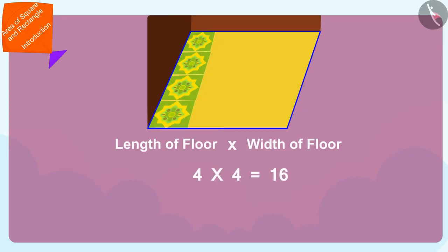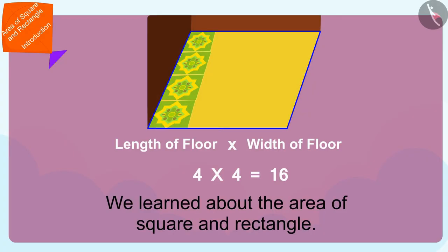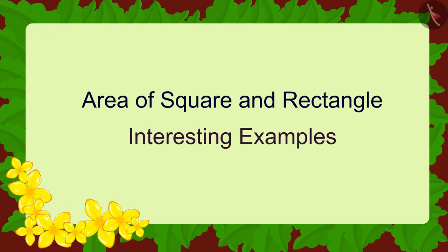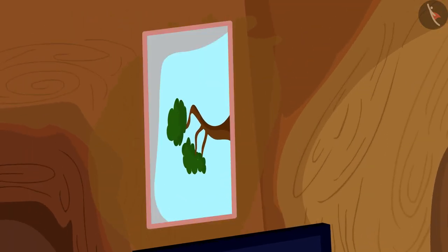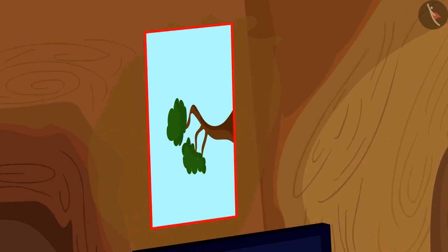Hello children, in the last video we learned about the area of square and rectangle. In this video we will learn more about it through some interesting examples. Chanda wants to fit a glass in her window pane. She has got such a frame made for her rectangle shaped window and now she has come to buy glass in the market.